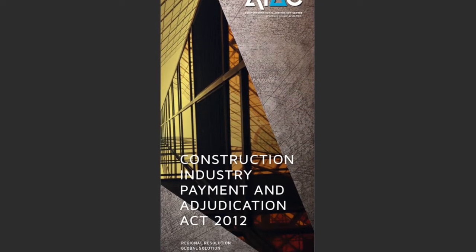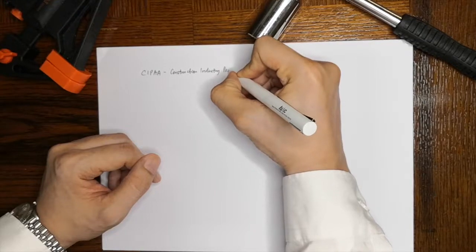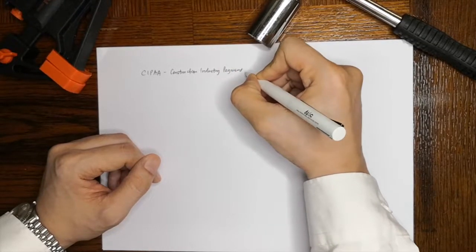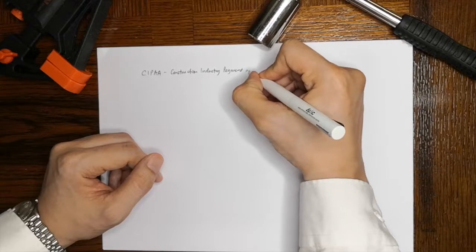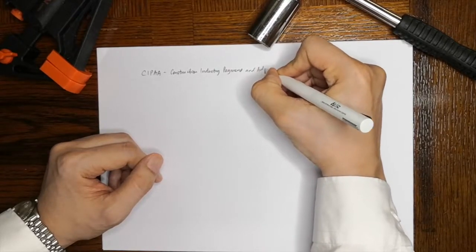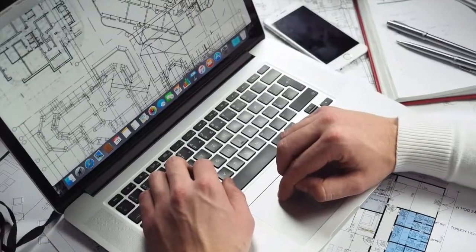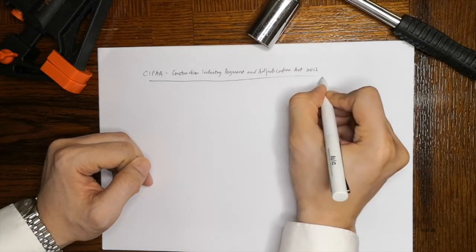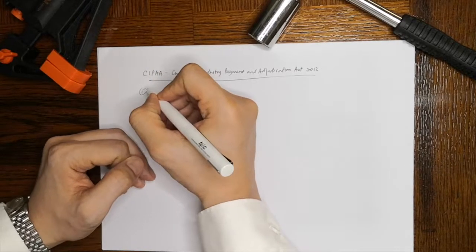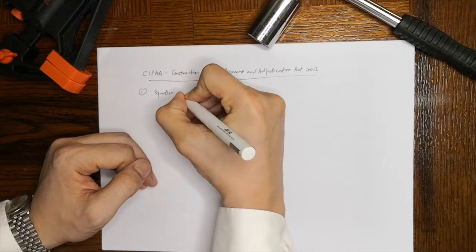The Construction Industry Payment and Adjudication Act 2012, also known as SIPA, aims to provide quick interim decisions on payment issues to avoid short-term cash flow problems for contractors, suppliers and service providers in the construction industry. It provides a mechanism for speedy dispute resolution through adjudication.